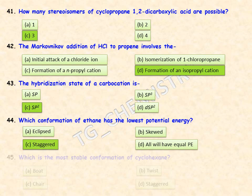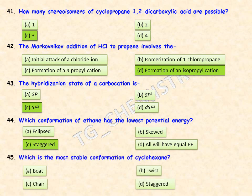Which is the most stable conformation of cyclohexane? Possible conformations are boat, twist, chair, and staggered. The chair conformation of cyclohexane is the most stable, so option C is the right answer.